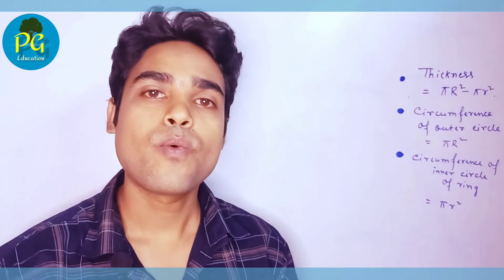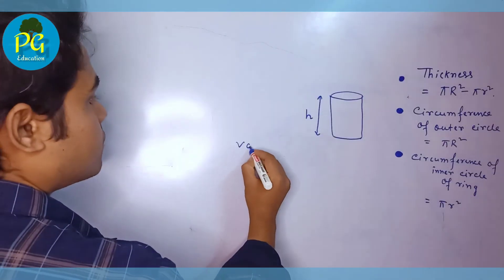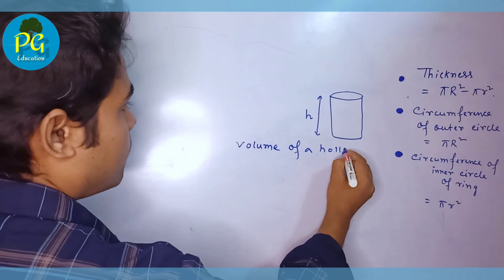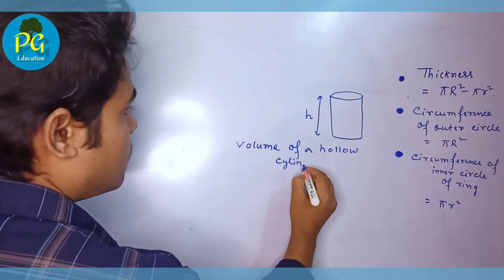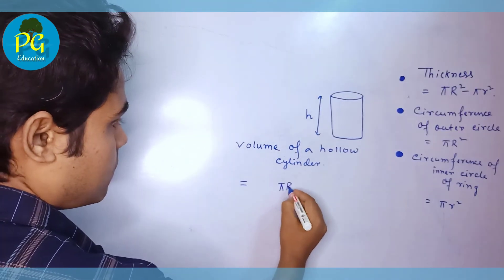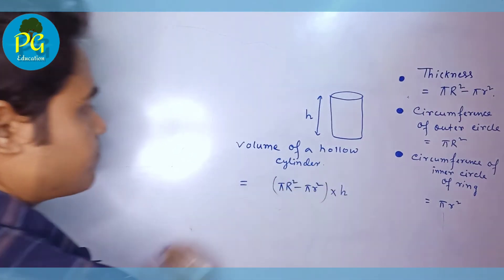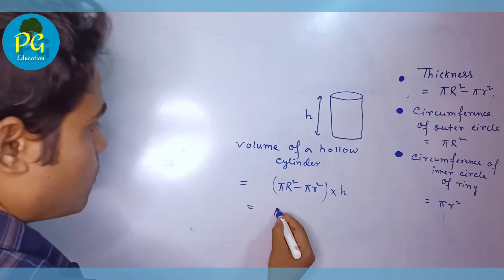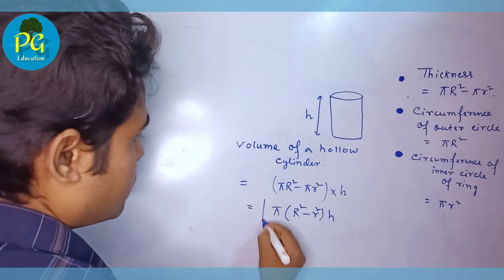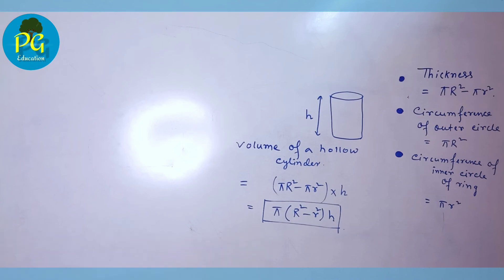If the question is to find out the volume of a hollow cylinder, the formula is: volume of a hollow cylinder equals the thickness into height, that means pi times (R squared minus r squared) times h. This is the formula for the volume of a hollow cylinder.